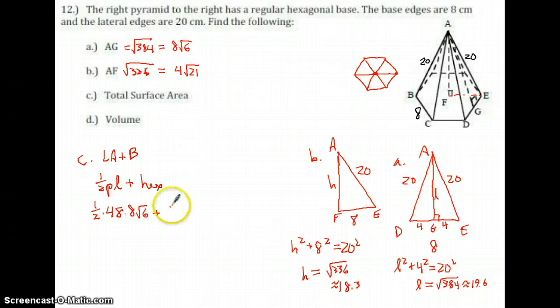P is 6 times 8, L I already found, it's 8 square root 6. Area of the hexagon, let's do half AP. Apothem is going to be like this distance here. If these are 8, this is going to be 4 right here, and this is 4 square root 3. So AP is 4 square root 3 times perimeter, which again is 48.